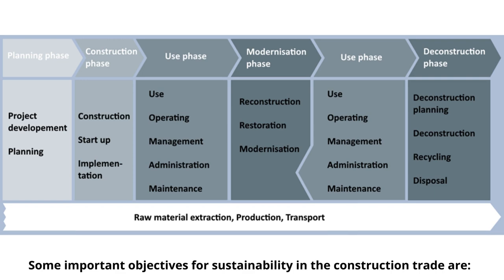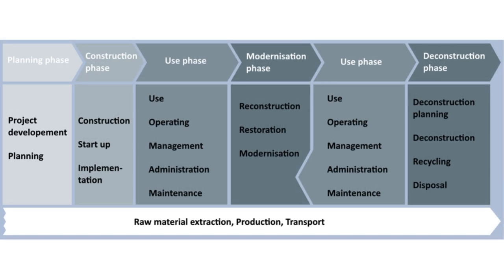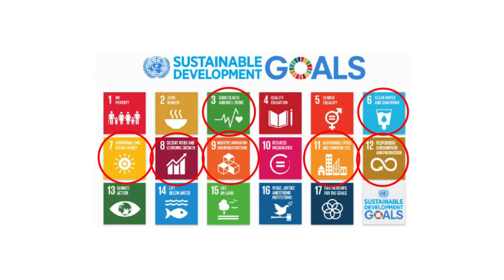Some important objectives for sustainability in the construction trade are: responsible handling of building materials, responsible use of water, responsible use of energy, responsible use of building land and nature. These objectives are part of the 17 UN Sustainable Development Goals.